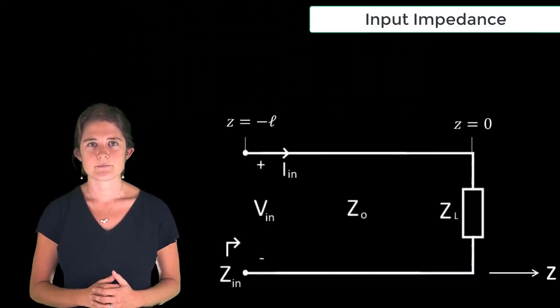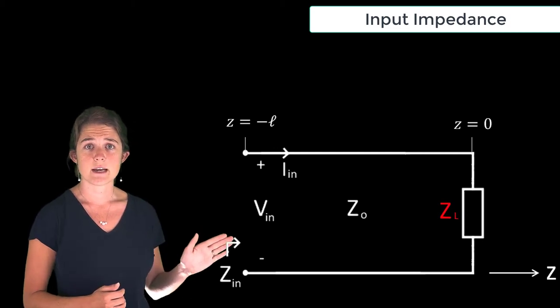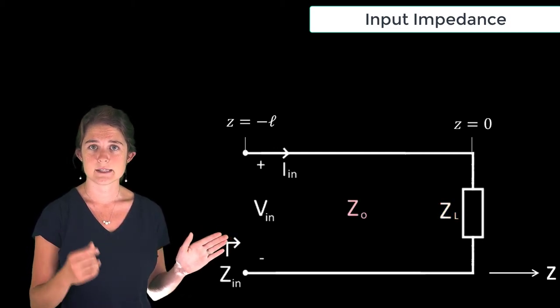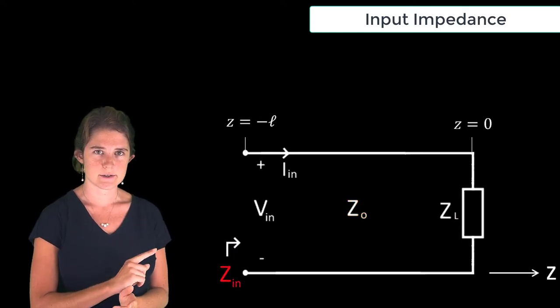Consider this scenario. Here you have a load impedance ZL at the end of a transmission line having characteristic impedance Z0. What is the input impedance to this system?